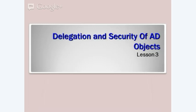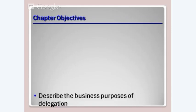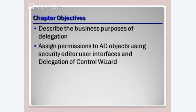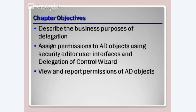Delegation and security of Active Directory objects. We're going to describe the business purposes of delegation, assign permissions to Active Directory objects using the security editor user interface and the Delegation of Control wizard — wizards can be our friend, all we do is enter what it asks. We can view and report permissions of Active Directory objects. Permissions can become a headache because if a user is in two different groups with conflicting privileges, they'll either be able to do something they shouldn't, or not be able to do something they should, and it can be difficult to find in a large organization.